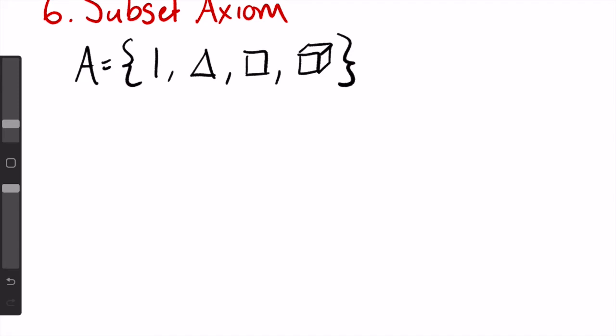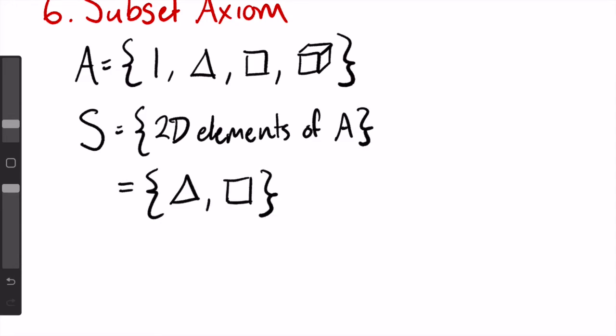The last axiom of set theory is called the subset axiom. It states that given some set a, we are always allowed to take any subset of a based on some condition. For example, let a be the set line, triangle, square, and cube. The subset axiom tells us that we can construct the set s containing all elements of a that are two-dimensional, which would be triangle and square. Note that this condition doesn't have to be a rule like being two-dimensional. The condition could literally be all elements of a that are either a line, a triangle, or a cube, so our subset would be line, triangle, cube. The important part is that we're picking elements from a to put inside our subset s.